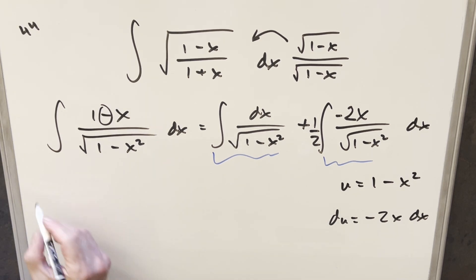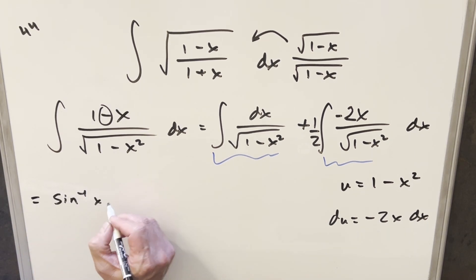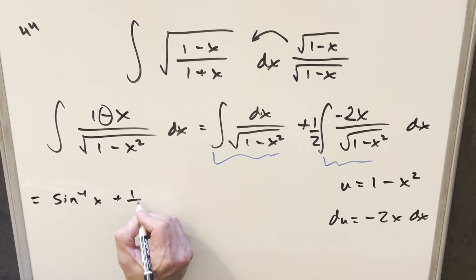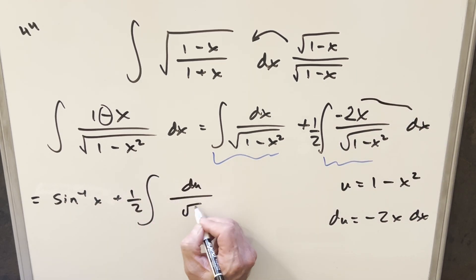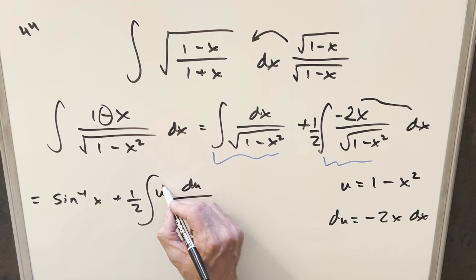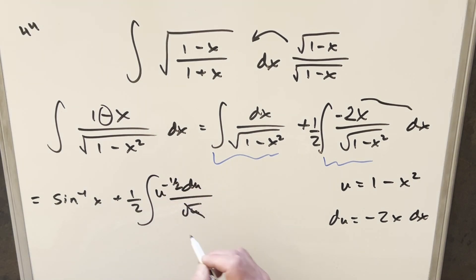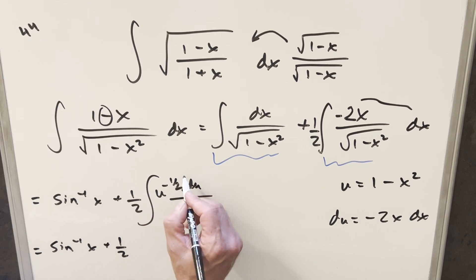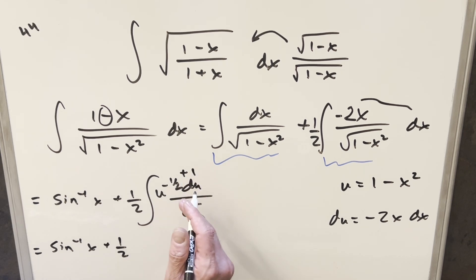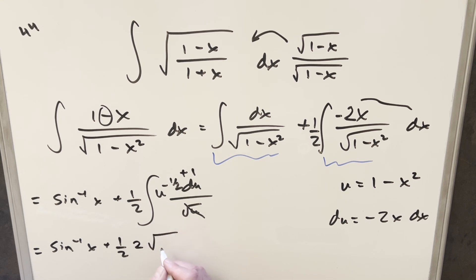For the first piece, that's just going to be arc sine of x. For the second part, we have our 1/2, and we rewrite everything up top as du over square root of u, or u to the minus 1/2, in order to apply the power rule. Integrating, we add 1 to get u to the 1/2, then take the reciprocal and multiply by 2 in front. Writing u to the 1/2 as square root of u, the 2's cancel.